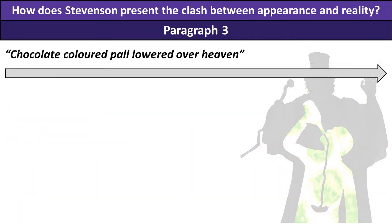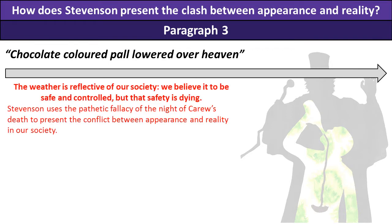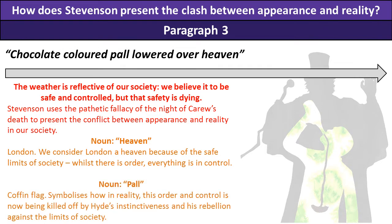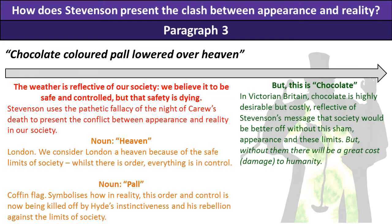Looking at the difference between the appearance and reality of society as a whole, I'd use the quote 'chocolate coloured pall lowered over heaven,' which describes the weather on the night Utterson went to find Hyde after the murder of Carew. The weather is reflective of our society — we believe it to be safe and controlled, but that safety is dying. The noun 'heaven' refers to London, which we consider a heaven because of the safe limits of our society. However, the noun 'pall' reflects a coffin flag, symbolising how in reality this order and control is being killed off by Hyde's instinctiveness and rebellion against society's limits.